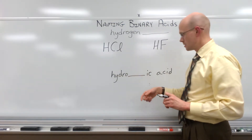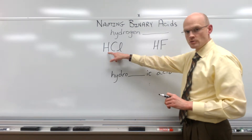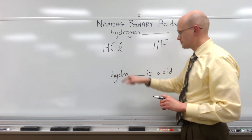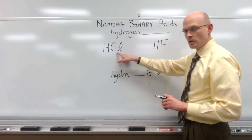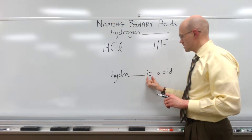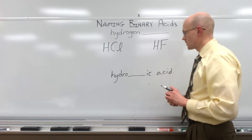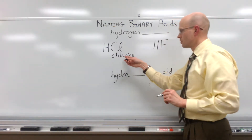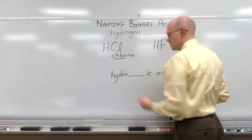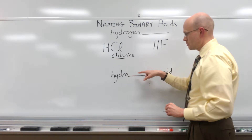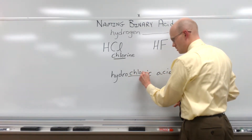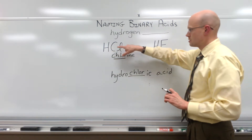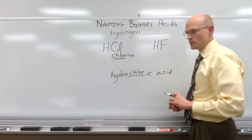The 'hydro' represents the hydrogen. It doesn't matter if there is one hydrogen, two hydrogens, or three hydrogens — it's 'hydro' to represent the hydrogen. The blank represents the nonmetal element involved, followed by the suffix '-ic' and the word 'acid.' So this is chlorine — the root of chlorine is 'chlor' — so this would be called hydrochloric acid.